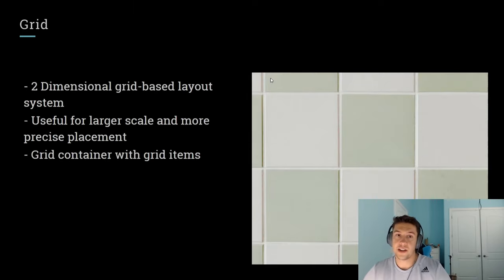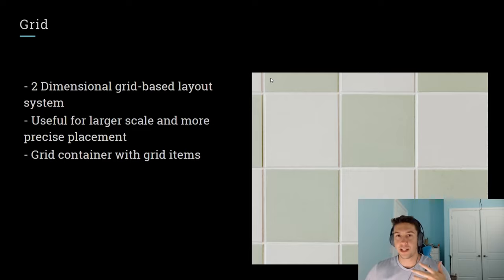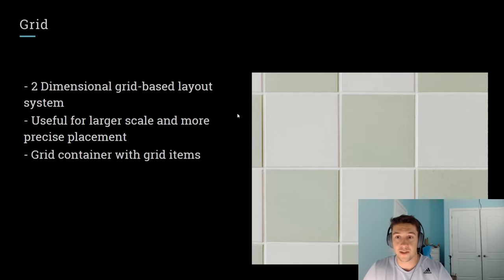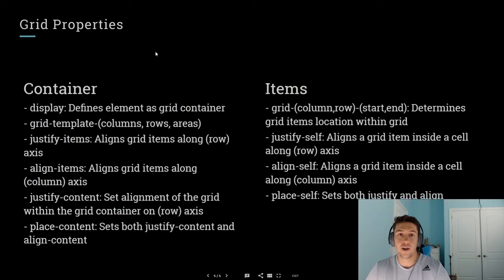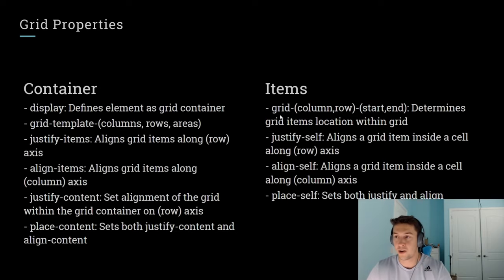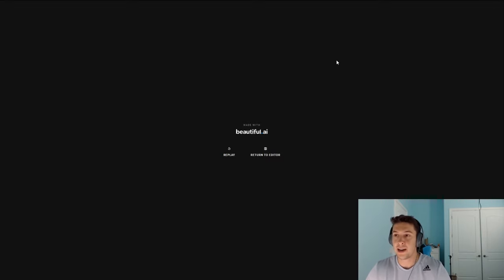Next, let's look at CSS Grid. Essentially, CSS Grid is a two-dimensional grid-based layout system. It's pretty useful for larger-scale and more precise placements. A lot of people say: if it's one-directional, use Flexbox; if it's two-directional, use Grid. But you can actually use Grid for one-directional layouts too — it's really powerful. They also work well together. Similar to Flexbox, Grid has containers and items, and many of the properties are similar: justify, align-items, justify-content, place-content, justify-self, align-self. And that's pretty much it for this presentation — let's get into some code.